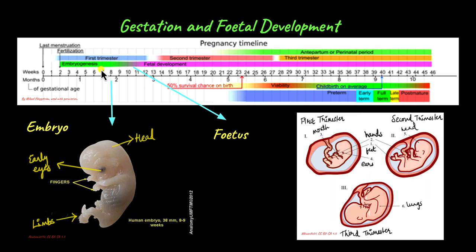During the first trimester, all organs like the heart and lungs begin to form. Hands and feet — the limbs — also begin to develop. During this time, the placenta also develops. The placenta serves as a link between the mother and the baby, and provides the baby with nutrients and oxygen. We will learn more about the placenta in just a while.